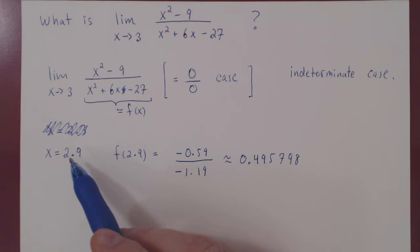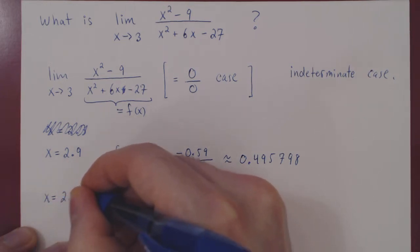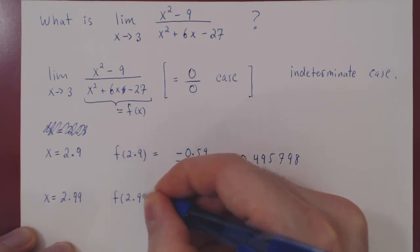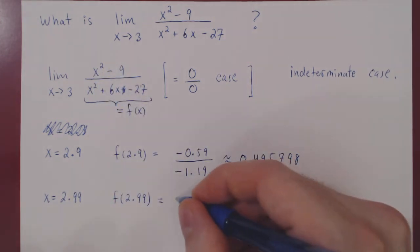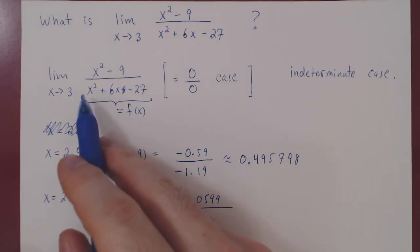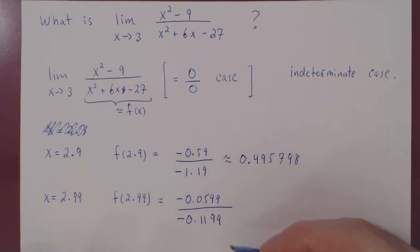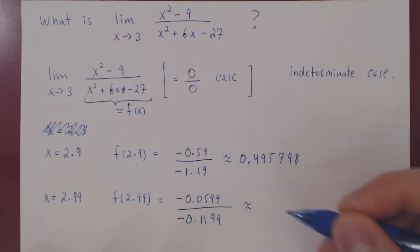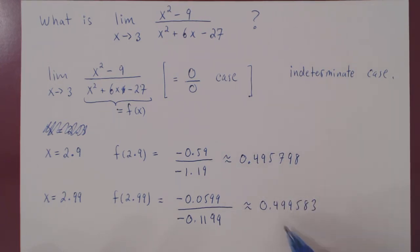Let's take an even closer value of x to 3 — let's take 2.99. If you replace x by 2.99, you'll get a numerator of exactly negative 0.0599, and plugging 2.99 into the denominator gives exactly negative 0.1199. Computing this quotient, you will find an approximate answer of 0.499583. So it looks like we're getting a little closer to 0.5, going from about 0.495 to 0.4995.